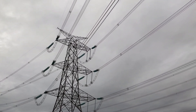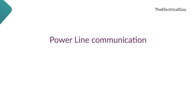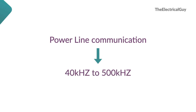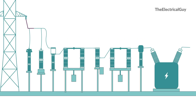Now to distinguish, communication signals are always delivered at very high frequency. That frequency can be 40kHz to 500kHz depending on the application. Now if these high frequency communication signals enter any substation equipment, which is designed for either 50Hz or 60Hz, it can damage the equipment.